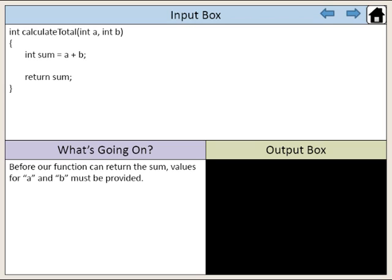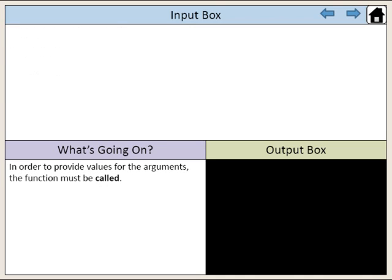Before our function can return the sum, values for a and b must be provided. In order to provide values for the arguments, the function must be called.